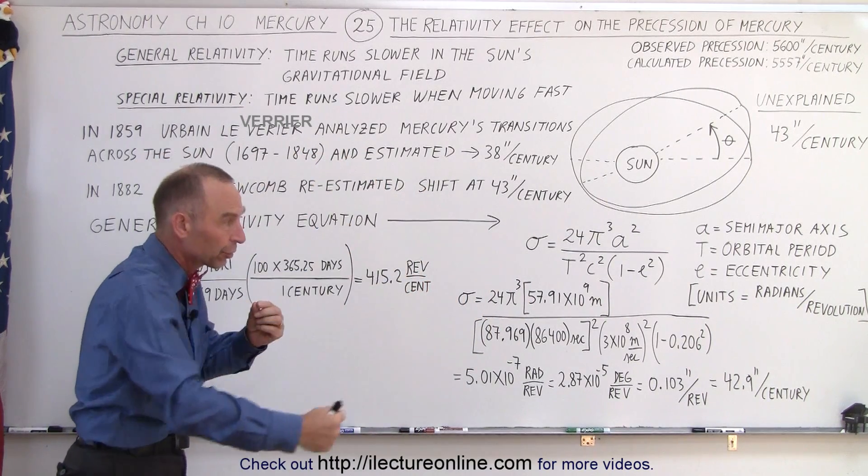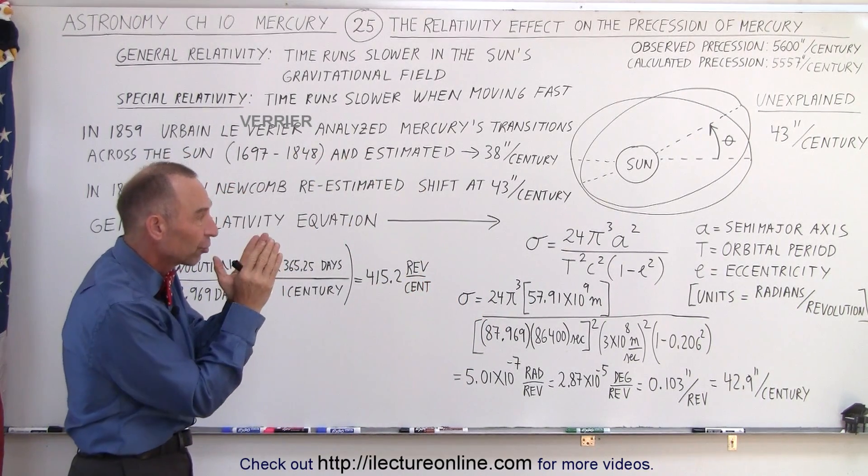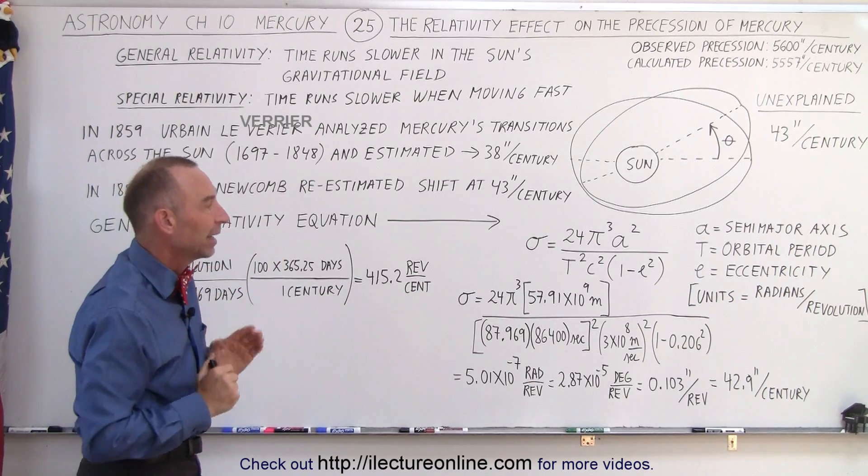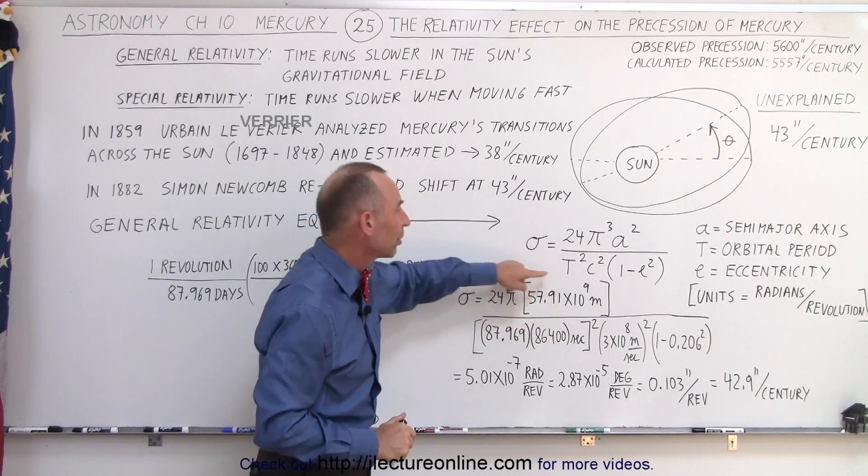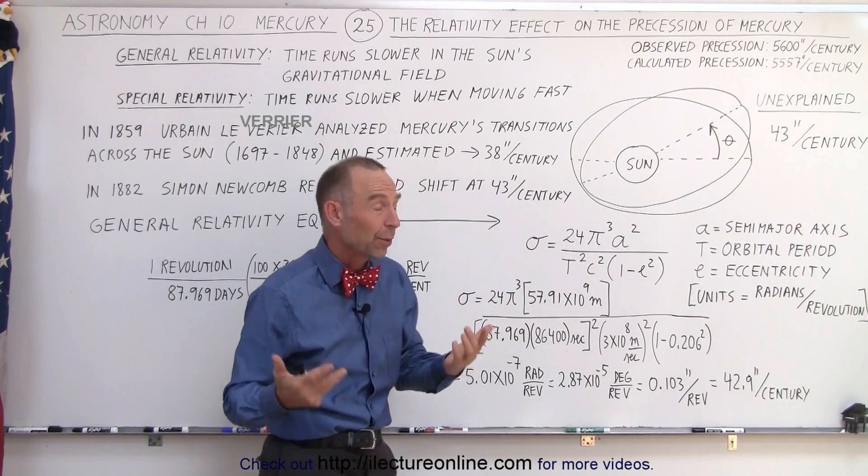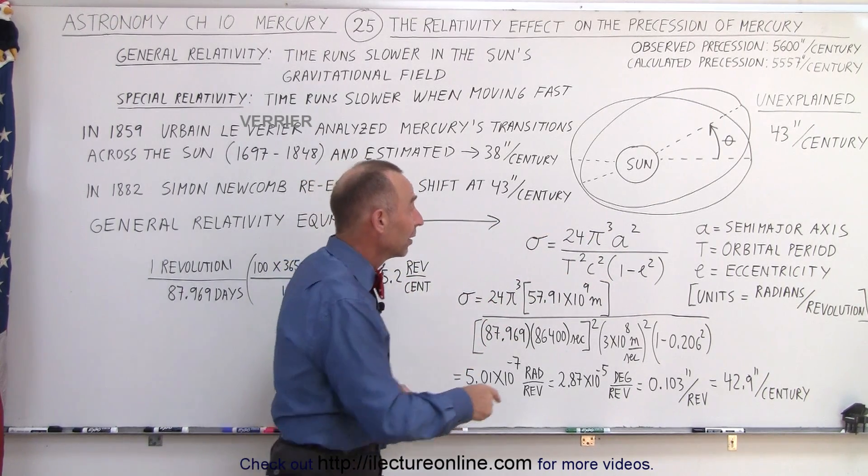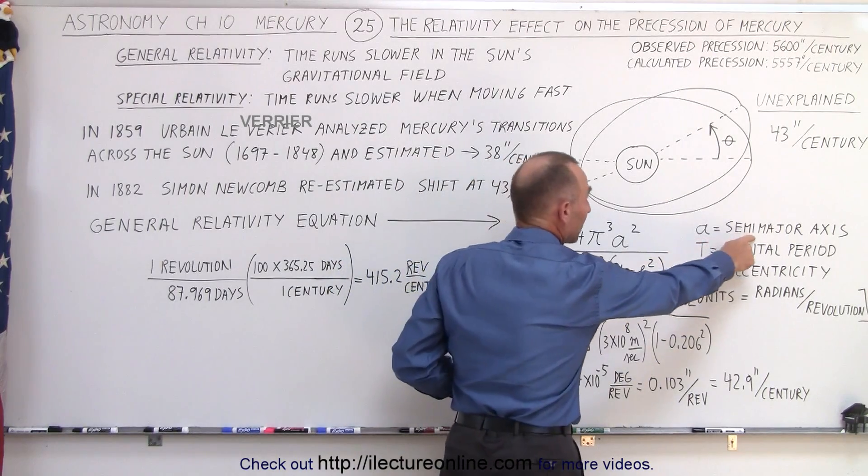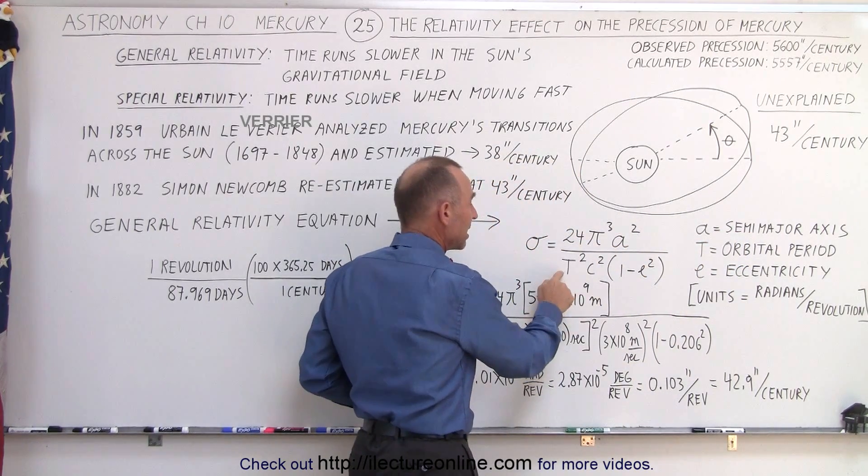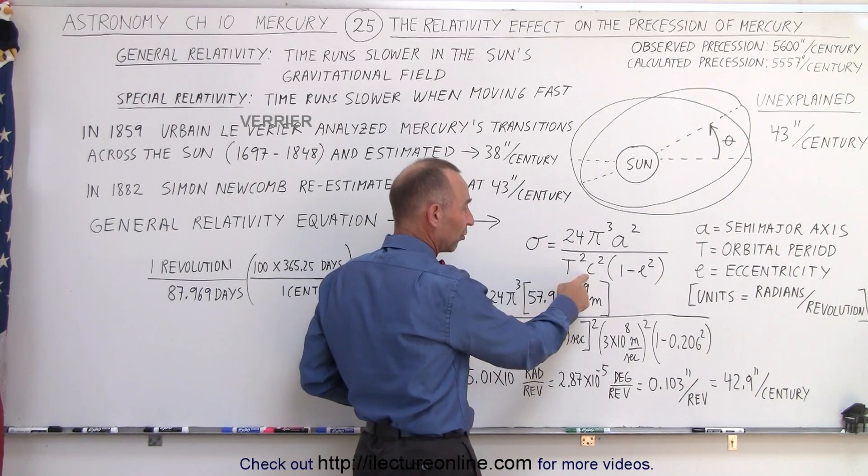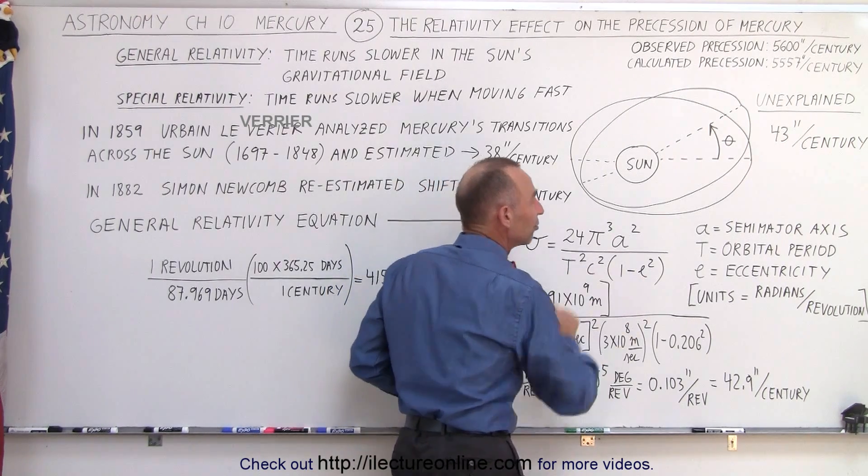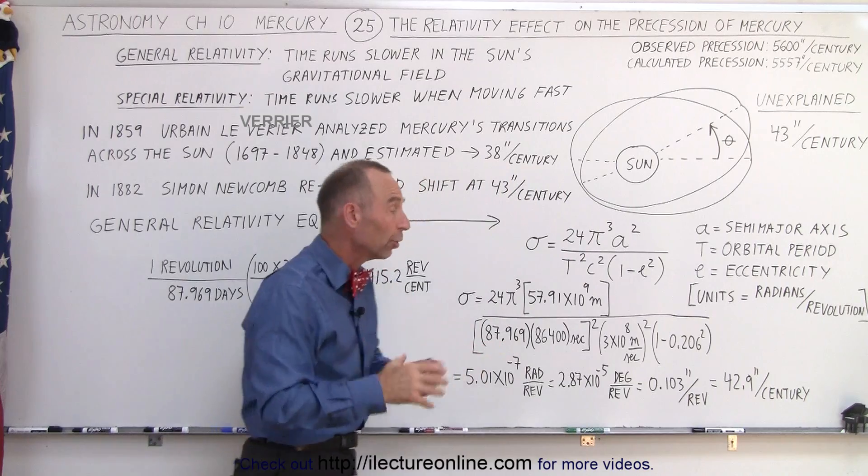So for every revolution, for every orbit of Mercury around the Sun there's going to be a slight shift in terms of radians and this is the equation that allowed them to calculate that number. Here we have what we call the semi-major axis, we use the letter a, here's the period, the time it takes for Mercury to go around the Sun once, the speed of light, and the eccentricity of the orbit. So when we plug in all the numbers...